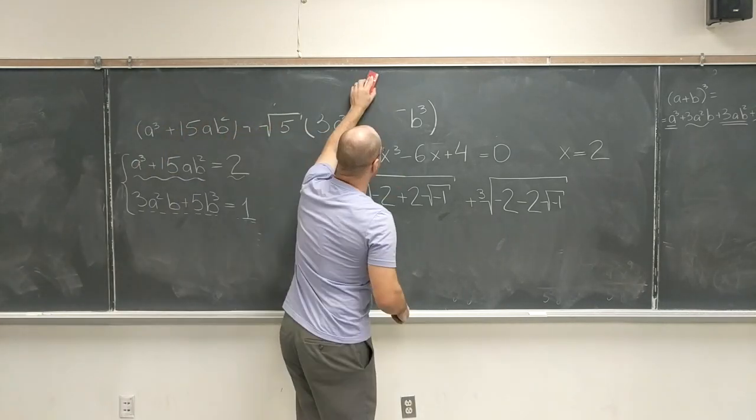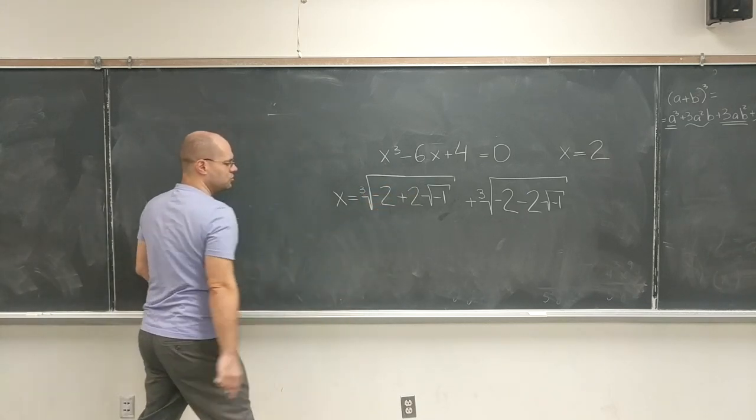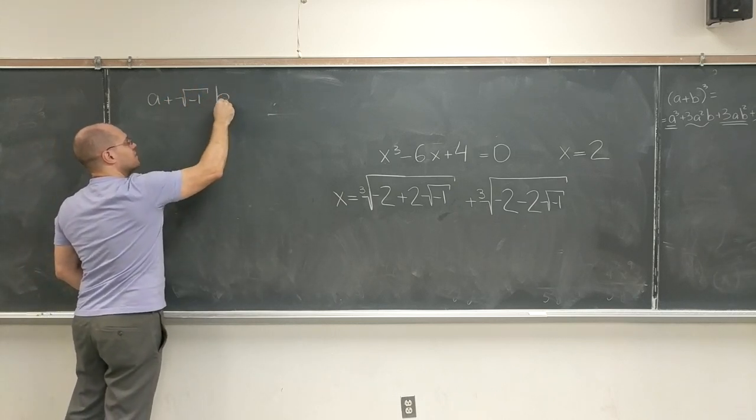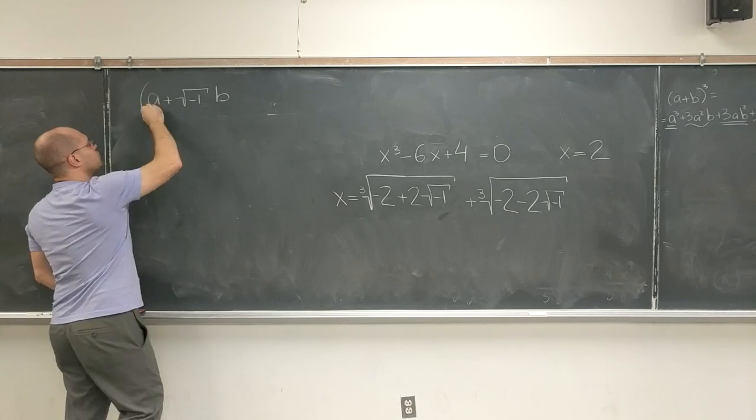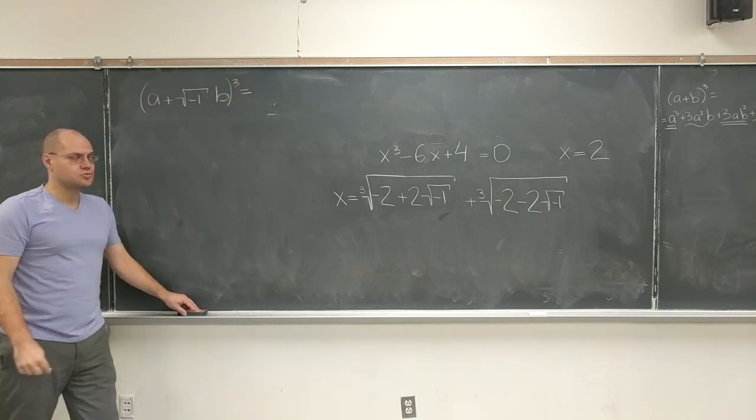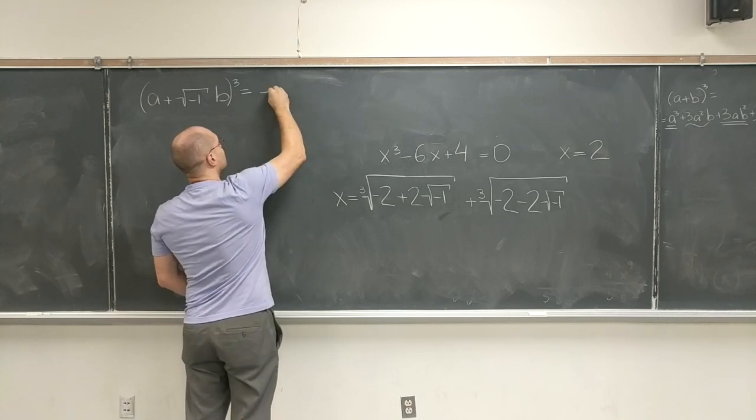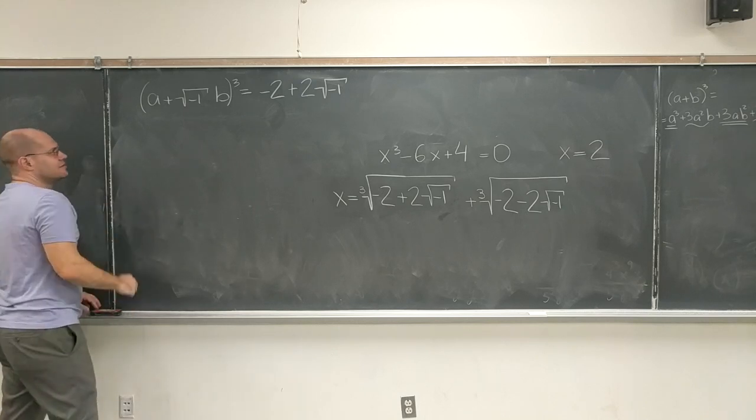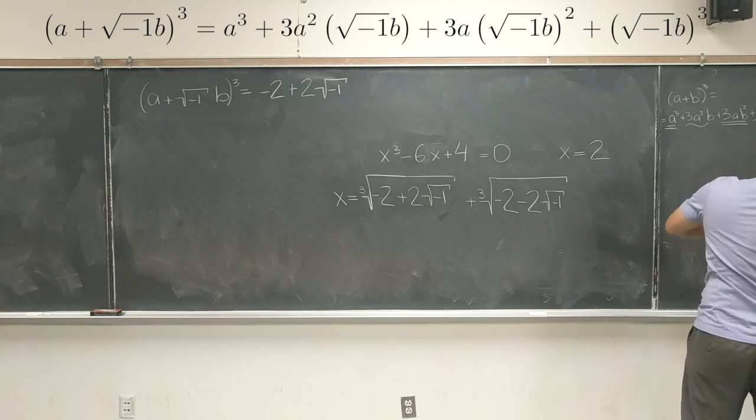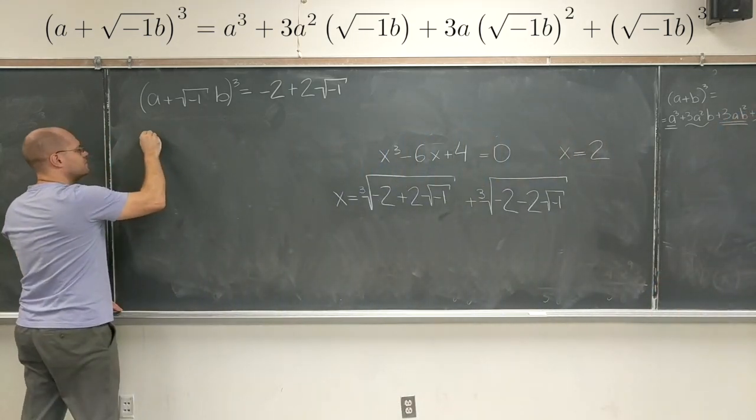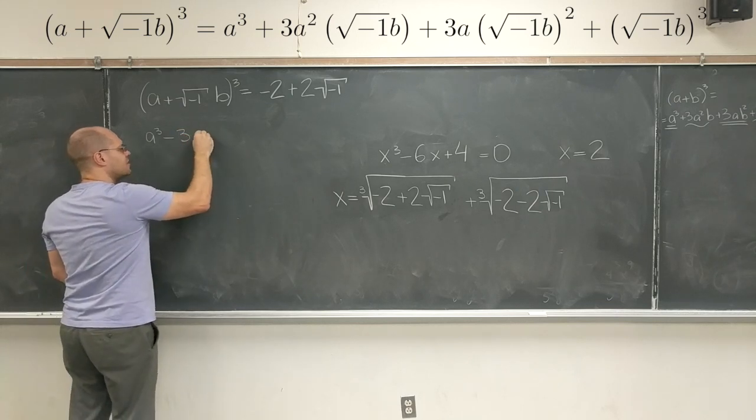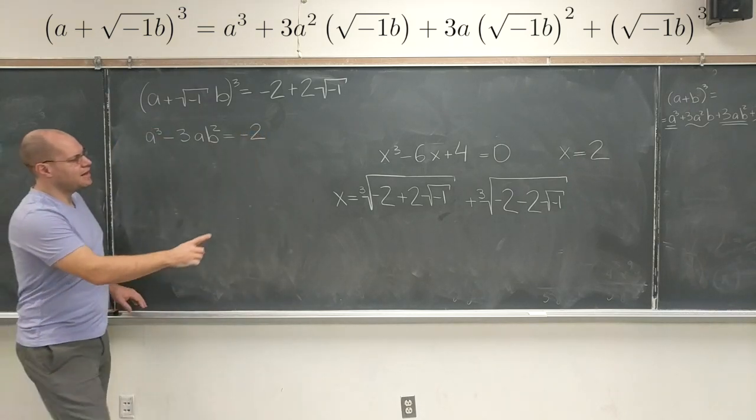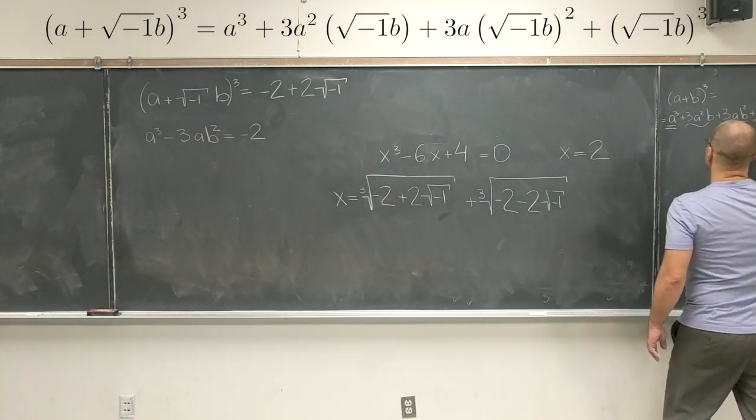So, he just said, maybe this cubic root is also of the form A plus this symbol B. And if I were to cube this, according to the standard rules of algebra, I will get, well, let's see what sort of system this will yield. Very similar. Once again, we'll group this term and this term. So here we have A cubed minus 3AB squared, and this needs to equal minus 2. Okay? And now combining this and this, I have...